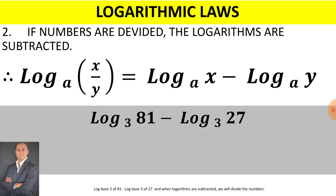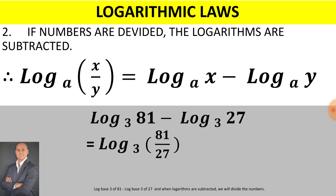Looking at the example: log base 3 of 81 minus log base 3 of 27. When we subtract logarithms, we divide the numbers. Therefore, 81 divided by 27 gives us 3. Now log base 3 of 3 is equal to 1.